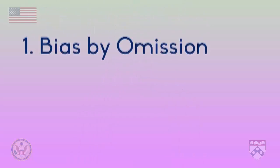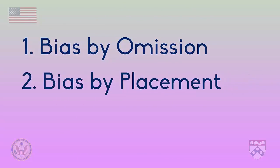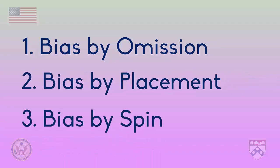These types of bias are bias by omission, bias by placement, and bias by spin. Now let's see what these might look like.